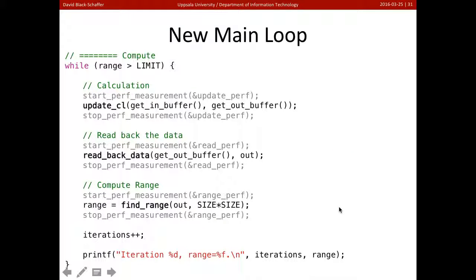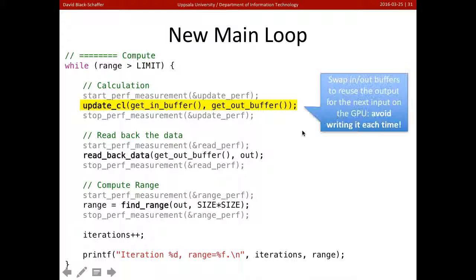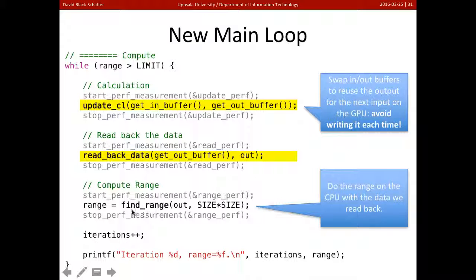So let's take a look at our new main loop doing this. This is our C program. We're going to run update_CL just like we did before, but now update_CL is going to choose which buffer it is. We're not going to tell it always what the in and out buffers are; every time we're going to swap the buffers. This allows us to keep the data on the GPU. We don't have to write it every time. Then we're going to read back our data because we still need to read back the data to run find_range on the CPU.